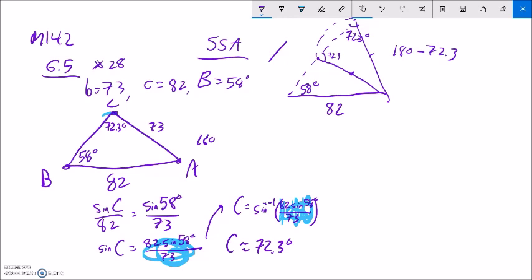So if I do that, 180 minus 72.3, I get 107.7. So my other possible triangle has this at 58 degrees and this is at 107.7 degrees. Now the way that I can check if it works or not is make sure this is actually a legitimate triangle, so the angles have to add up to 180.